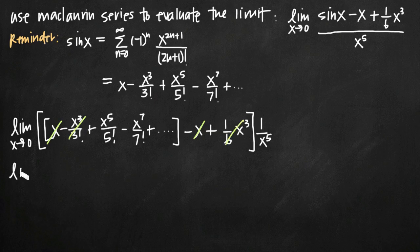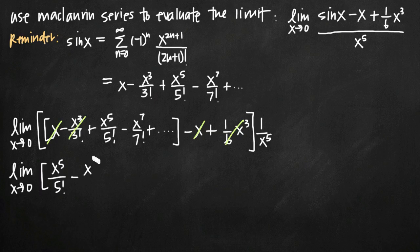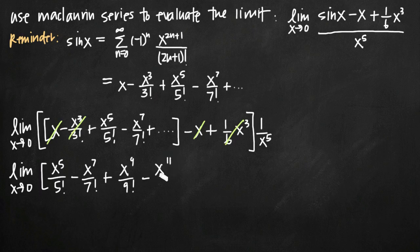What we're left with is the limit as x goes to zero. After cancelling the first two terms, we're left with x to the fifth over 5 factorial minus x to the seventh over 7 factorial. We can add a few more terms for a good visual representation — continuing with x to the eleventh over 11 factorial plus dot dot dot — and we're multiplying all of that by one over x to the fifth.